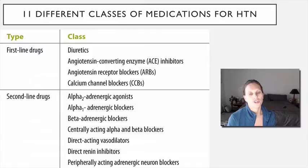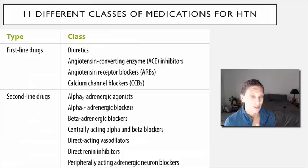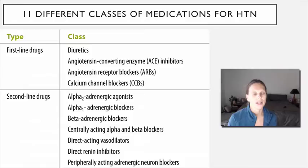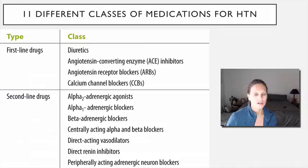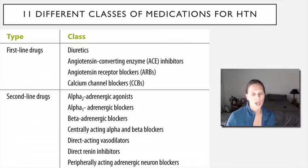The second-line drugs include alpha-2 adrenergic agonists, which work centrally; alpha-1 blockers, which block alpha receptors at the smooth muscle of arterioles causing vasodilation; beta blockers, which block beta-1 receptors of the heart and possibly beta-2 receptors; centrally acting drugs that block alpha and beta receptors peripherally; direct acting vasodilators; direct renin inhibitors; and peripherally acting adrenergic neuron blockers. These have some utility but aren't commonly used.